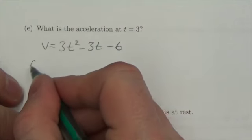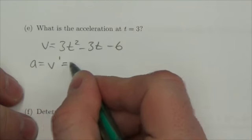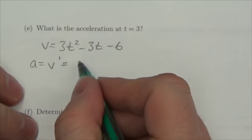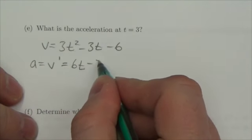So we know that the acceleration is going to be the derivative of the velocity with respect to time, and that will be 6t minus 3.